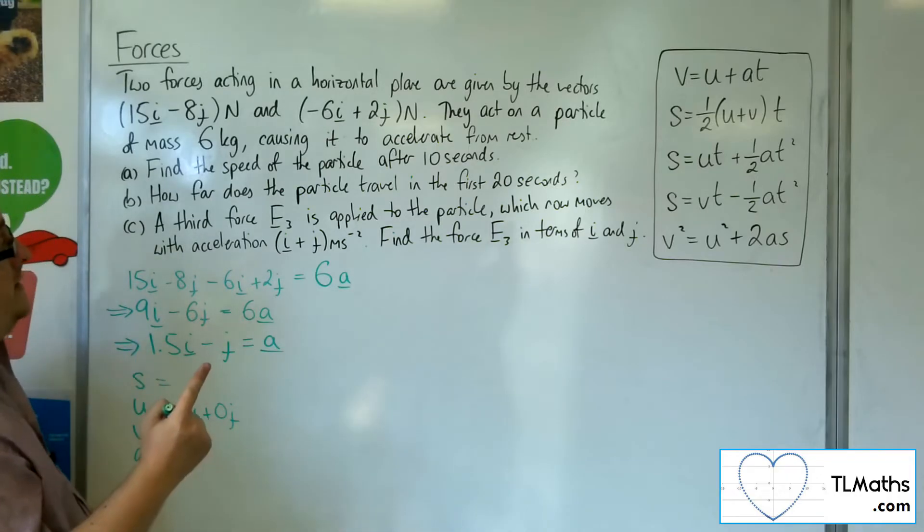Okay, so now that we've got the acceleration, we should be able to find the speed of the particle after 10 seconds. So now SUVAT comes in. Okay, so what have we got? Well, we know that the particle is accelerating from rest, and so that would be 0i plus 0j. The velocity is what I want to find in order to find the speed. We know that time is 10 seconds. We know the acceleration is 1.5i minus j.